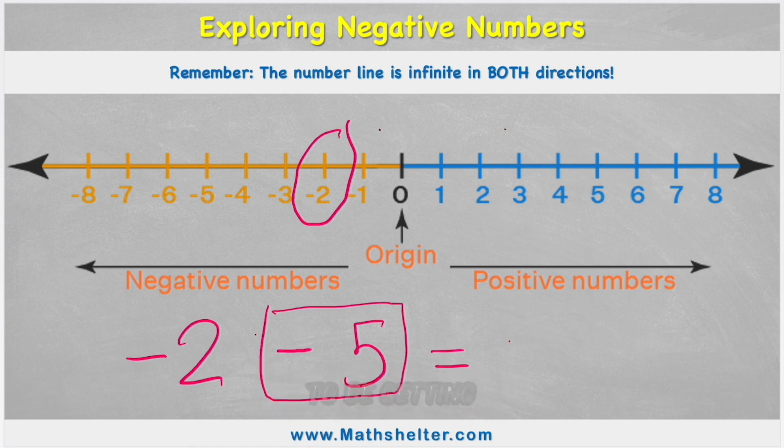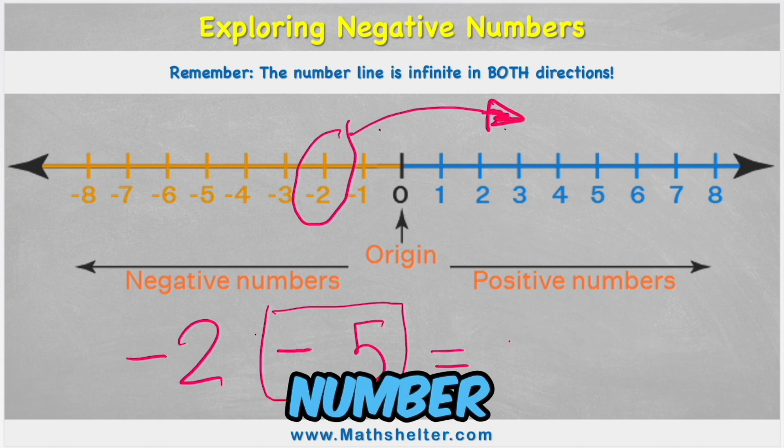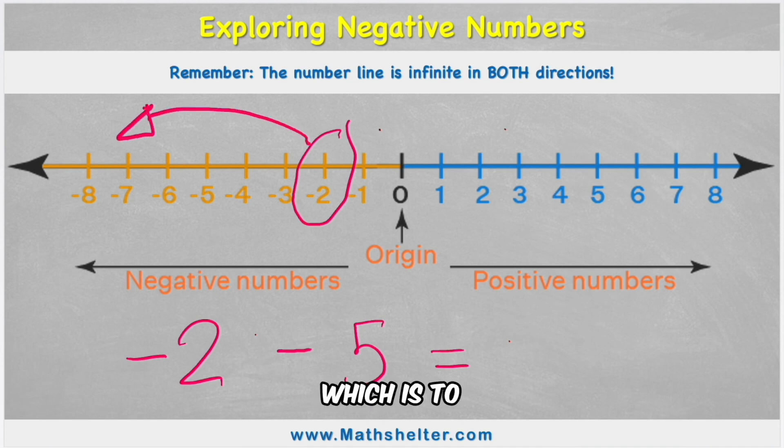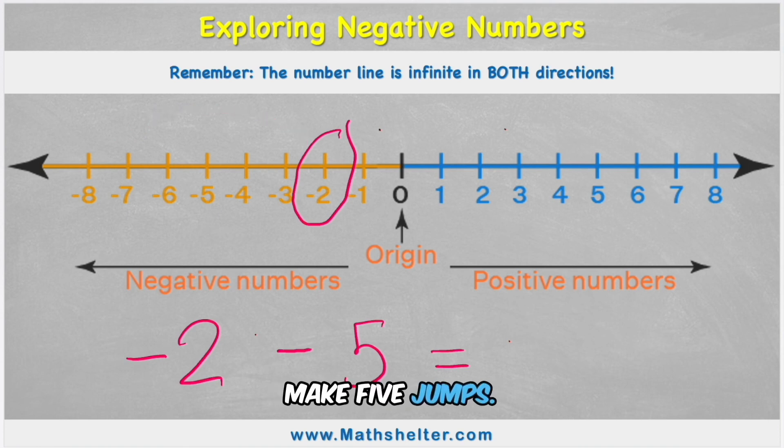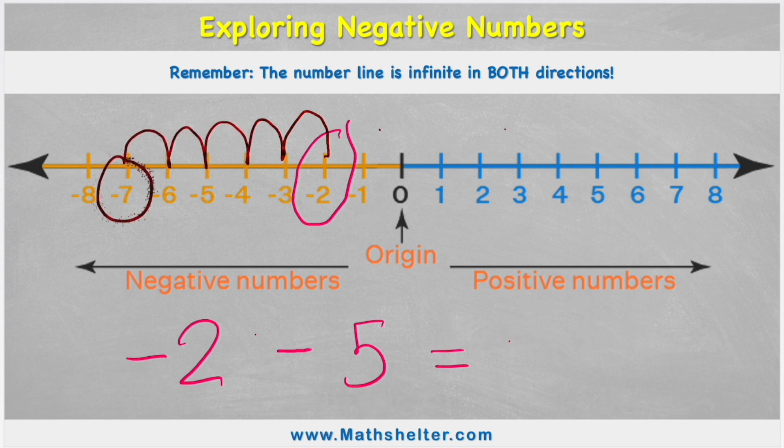Well, because I'm having to subtract five, I'm not going to be getting more. More would be coming up my number line. I'm going to be getting less, which is to the left of my number line. So if I'm on negative two now, and I need to take five away, I'm going to make five jumps. One, two, three, four, five. And I would end up with negative seven.